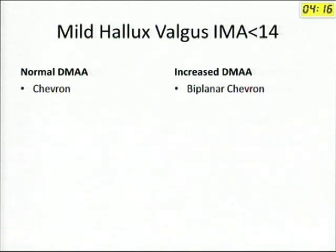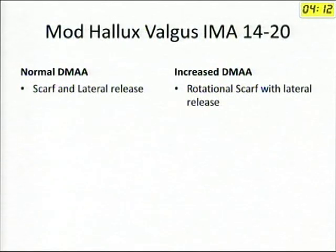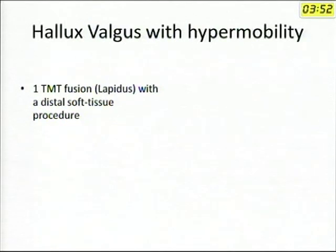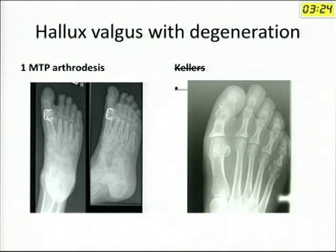The broad treatment guidelines are: if IMA is less than 14, you go for a chevron osteotomy. If IMA is from 14 to 20, you go for a scarf osteotomy. If valgus is more than 20, you go for a scarf, proximal osteotomy, or TMT fusion. Generally, if the deformity is mild you go for a distal osteotomy; as the deformity increases you go more proximal. There is another specific group — patients with hypermobility. If you do the squeeze test and squeeze the TMT joints and can correct the deformity, they are likely to require a first TMT joint fusion, as osteotomies have a higher recurrence rate in hypermobile patients. This is common in adolescent hallux valgus. In patients with hallux valgus and degeneration, first TMT joint fusion is a very good option.